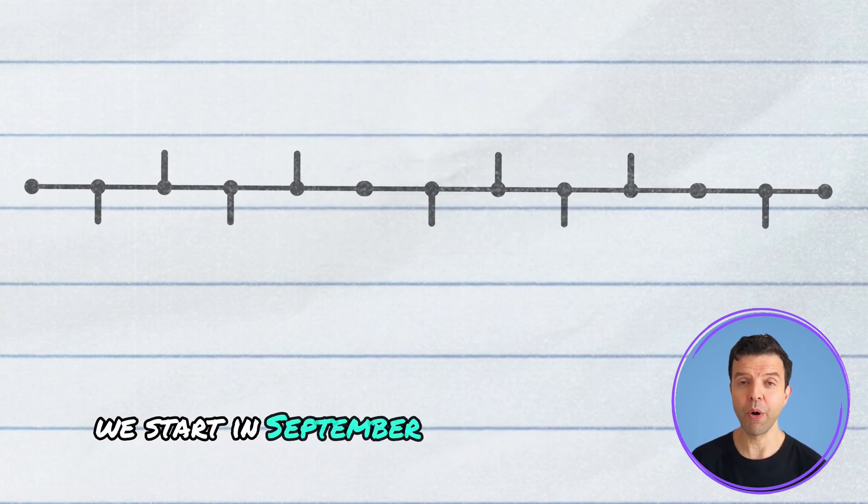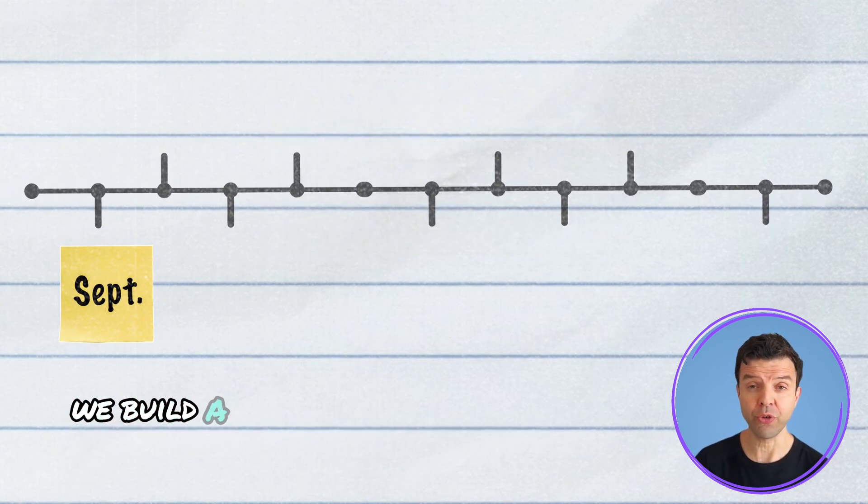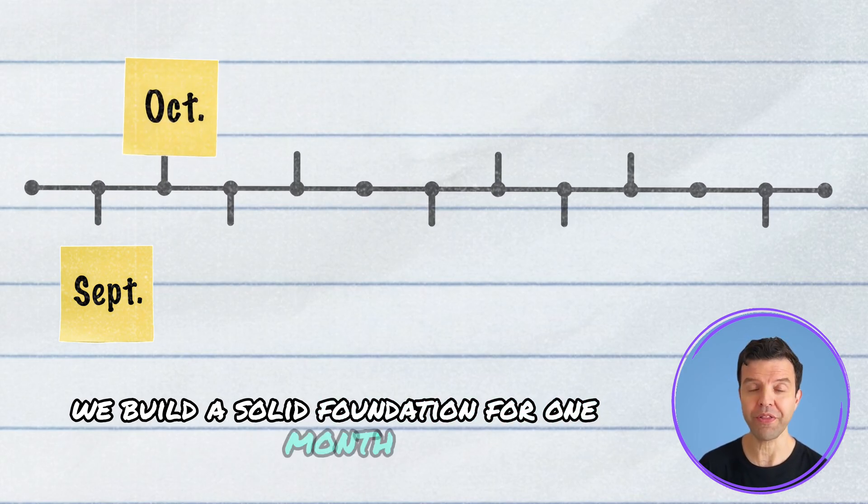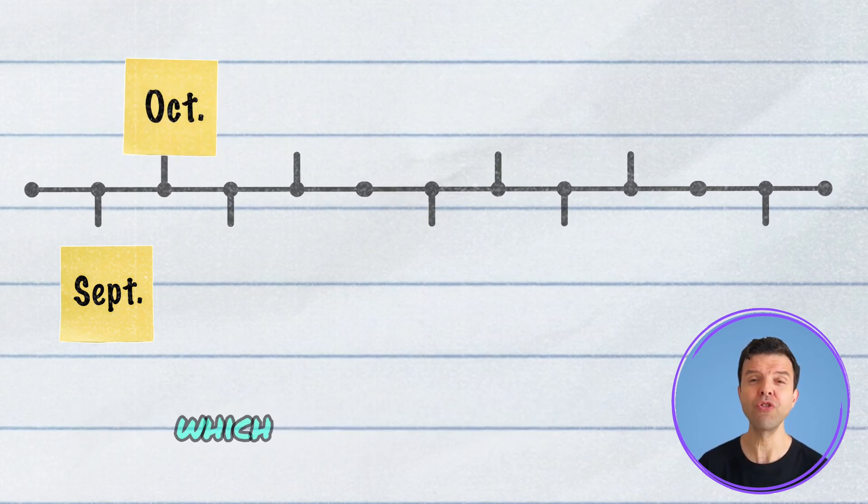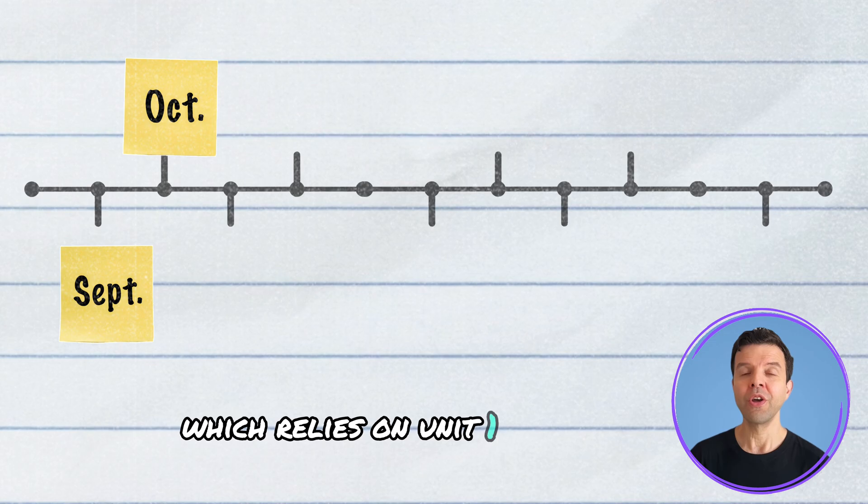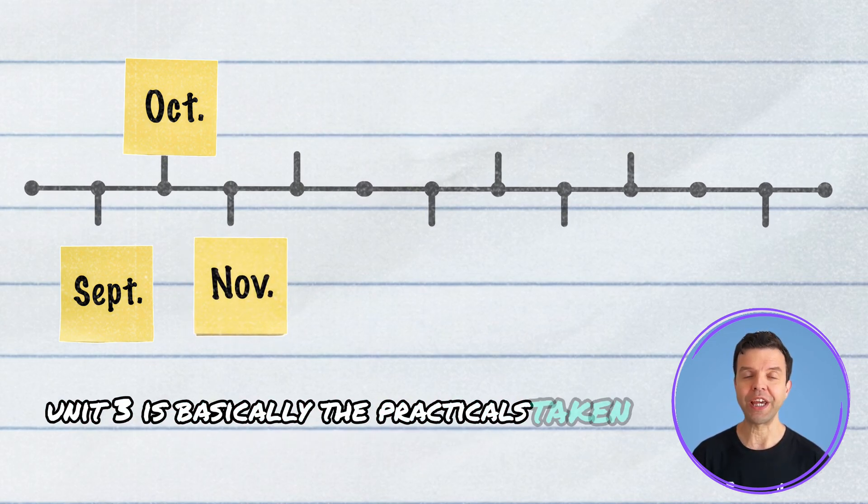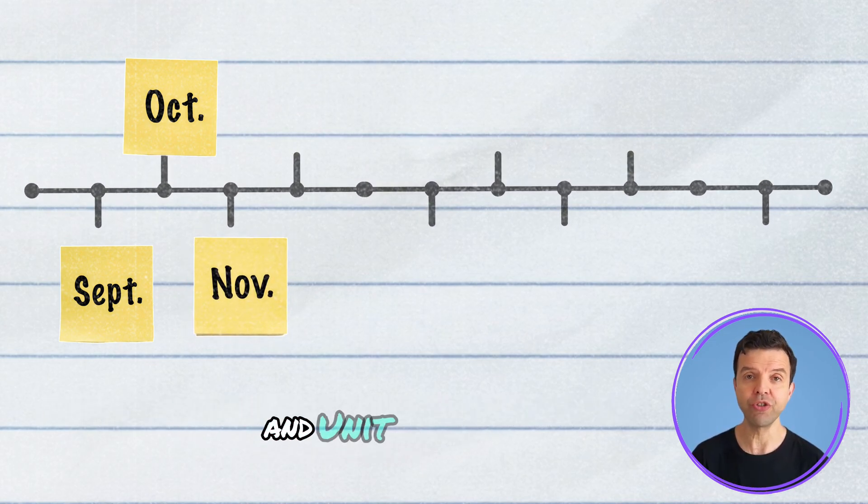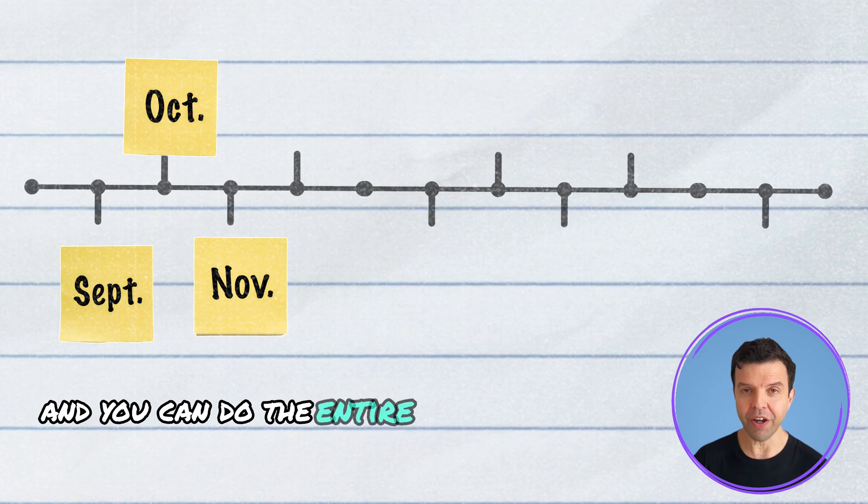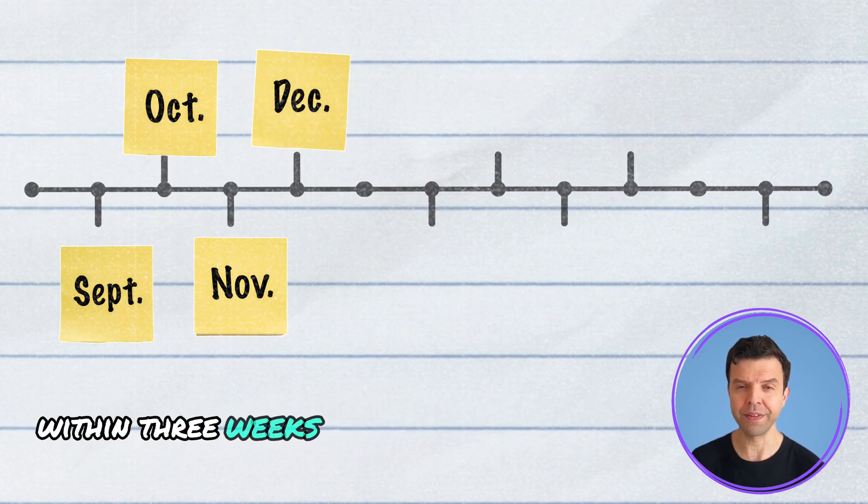We start in September with Unit 1. We build a solid foundation for one month, and then we start with Unit 2, which relies on Unit 1. Unit 3 is basically the practicals taken from Unit 1 and Unit 2, and you can do the entire past papers of Unit 3 within three weeks.